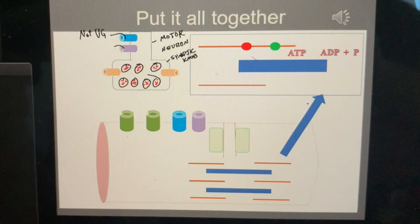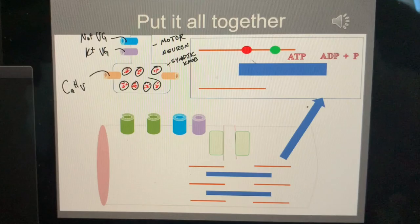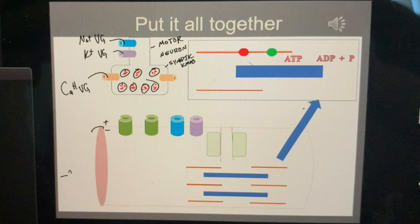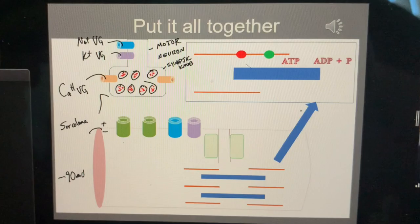Then you have what on this axon? I got the sodium voltage-gated channel, potassium voltage-gated channel. At the synaptic knob I have lots of calcium voltage-gated channels. Positive on the outside, negative on the inside - negative 90 millivolts.